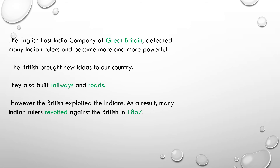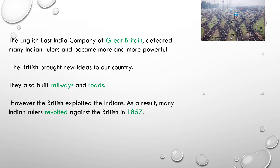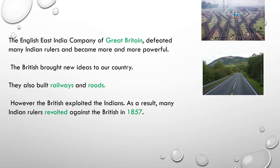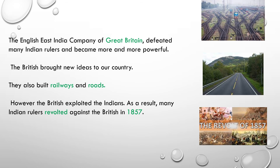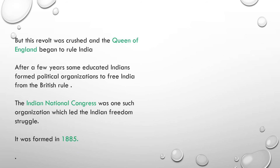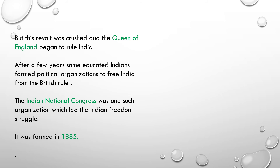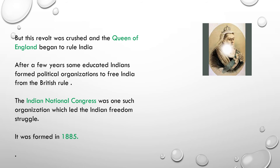The English East India Company defeated many Indian rulers. The British built railways and roads also. However, the British exploited the Indians. As a result, many Indian rulers revolted against the British in 1857 — it is the Revolt of 1857. But this revolt was crushed and Queen Victoria of England began to rule India. Who was the Queen of England? Very good — Victoria.